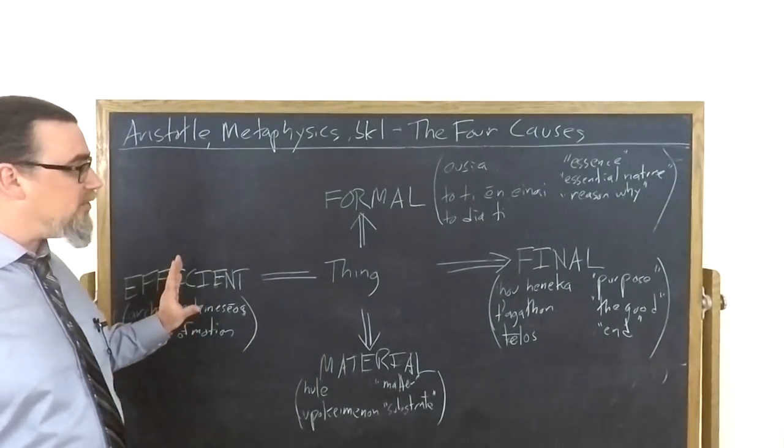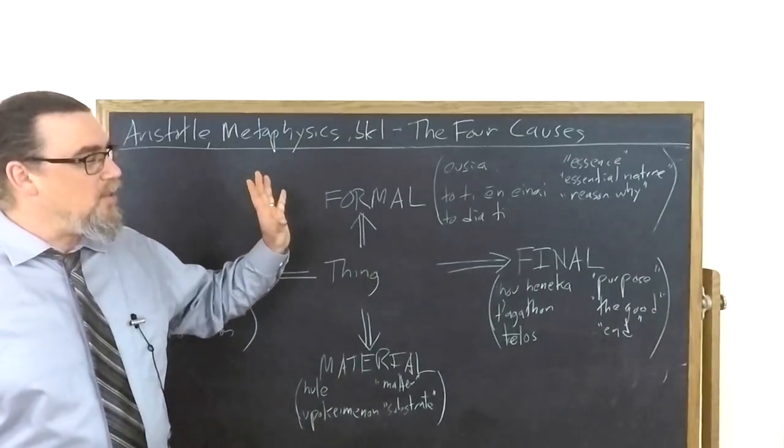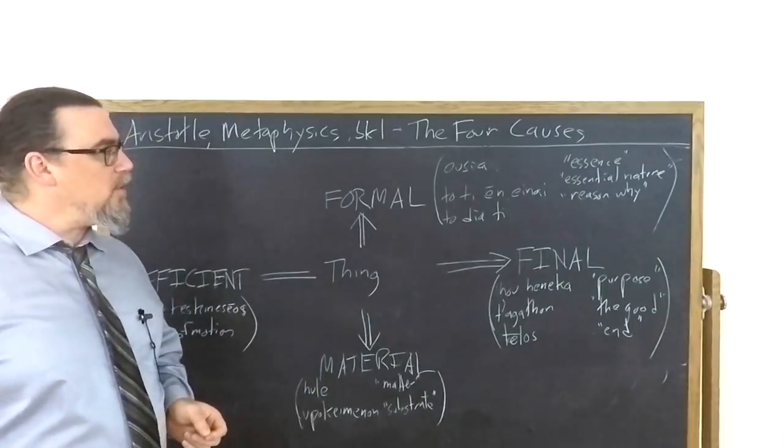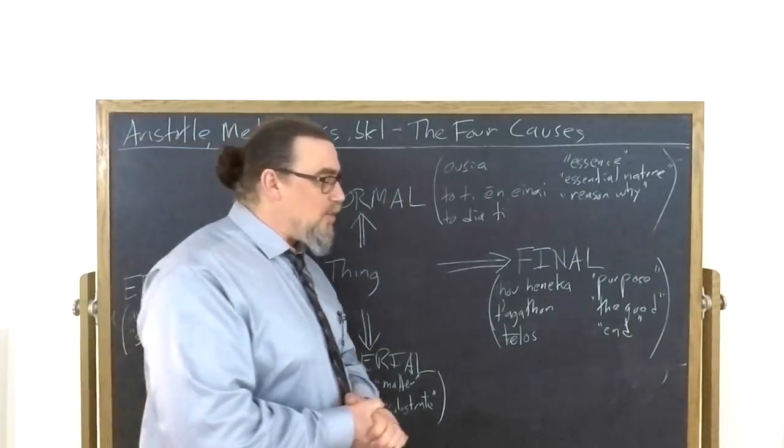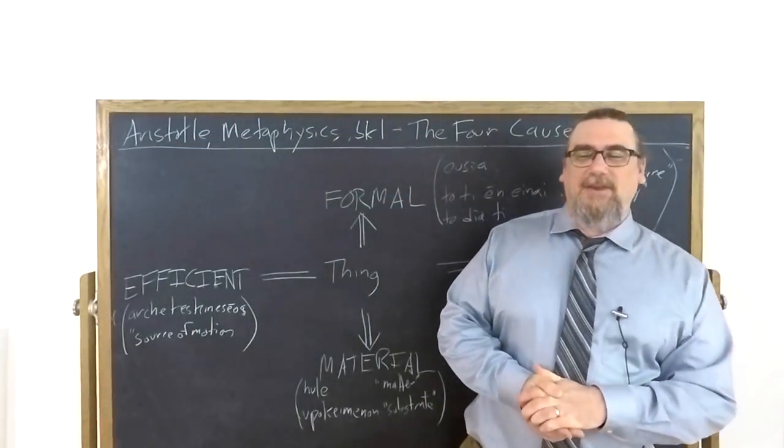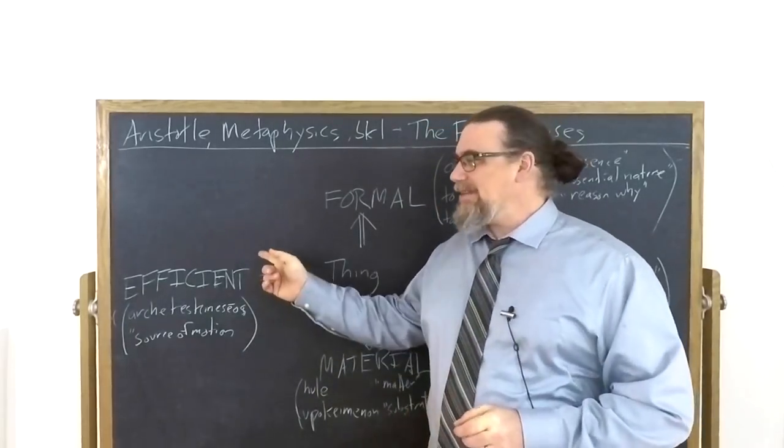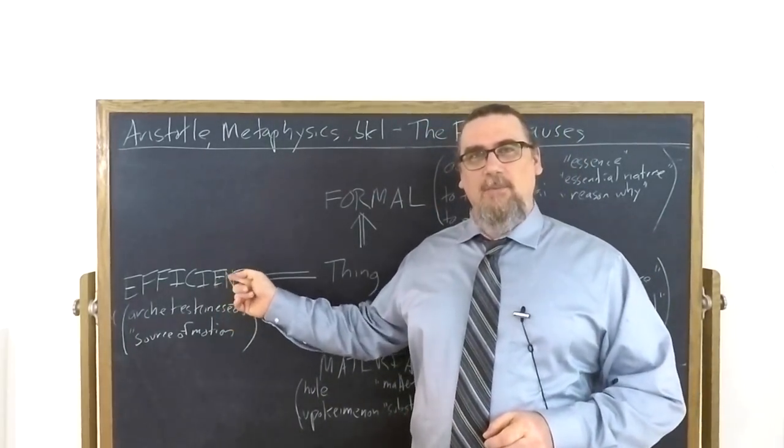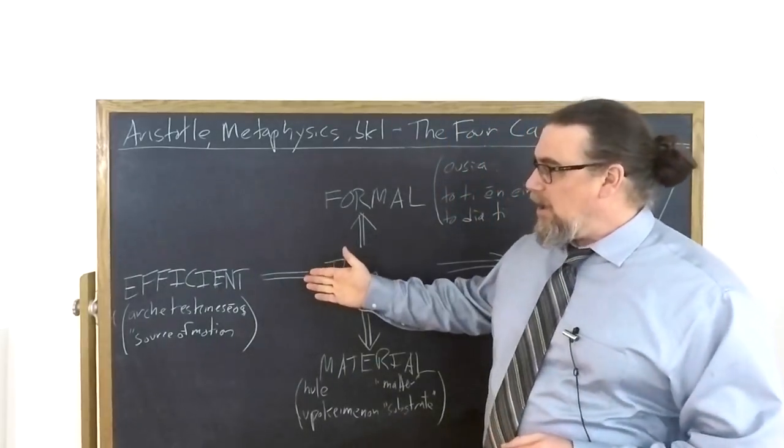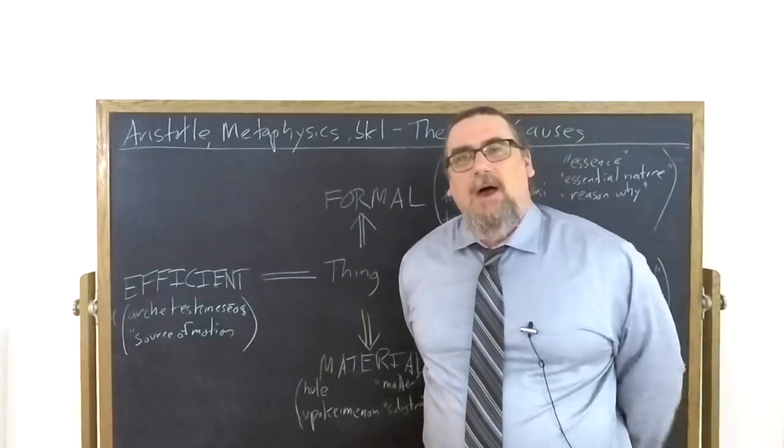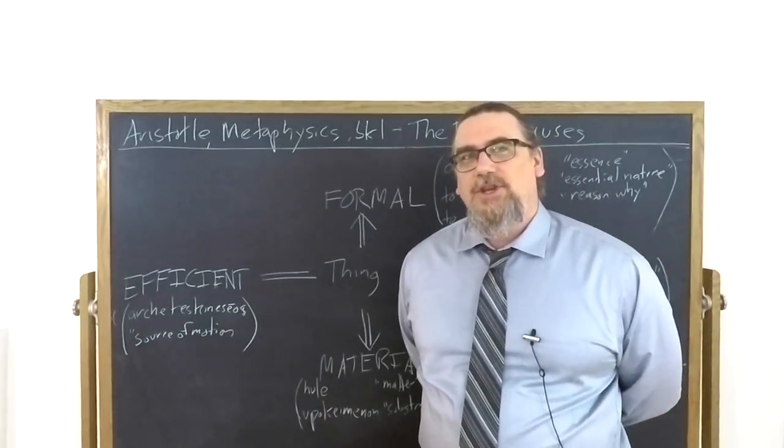It's enough to notice that if we have a form imposed on matter, something could impose that form or produce it. Aristotle has another really interesting example in the physics where he says that the person who gave counsel is also an efficient or moving cause. And he calls this the arche tes kineseos, the source of the motion or change.